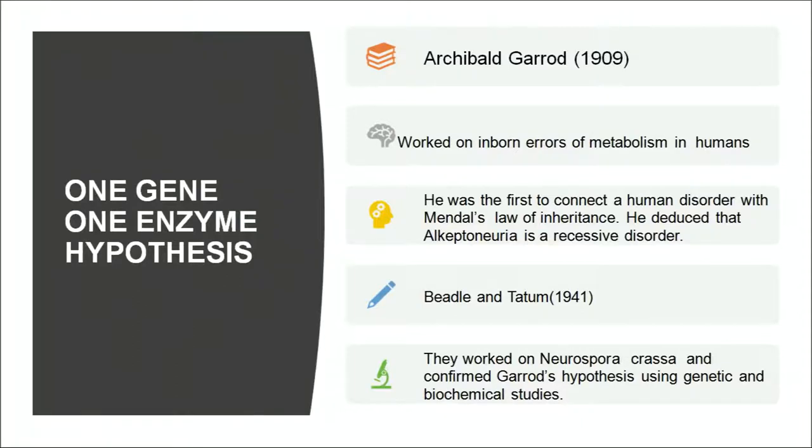What happens in alkaptonuria? When the person passes urine, the urine turns black on exposure to air. The urine turns black due to the presence of a substance called homogentisic acid. In normal individuals, homogentisic acid is converted to acetoacetic acid by the activity of an enzyme. But this particular enzyme is absent in individuals suffering from alkaptonuria. Archibald Garrod was the first to connect a human disorder with Mendel's laws of inheritance, and he deduced that alkaptonuria is a recessive disorder.